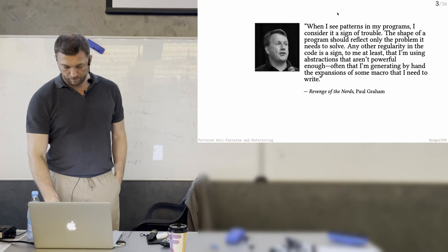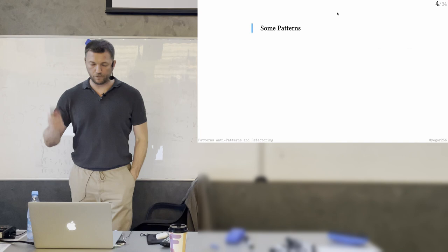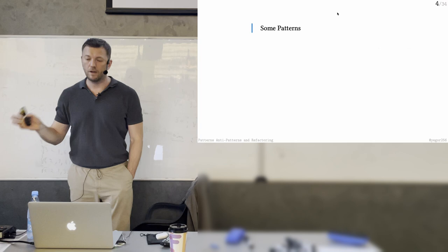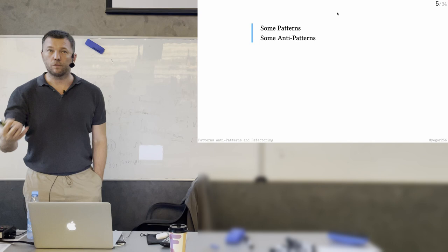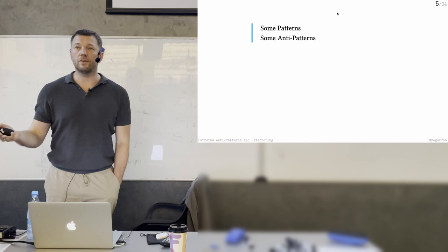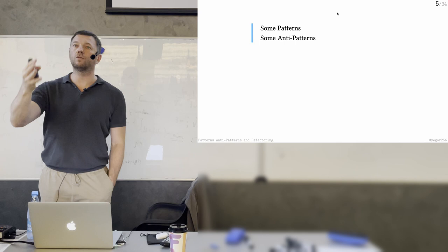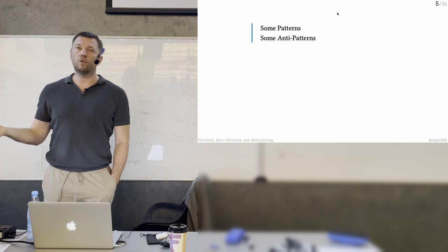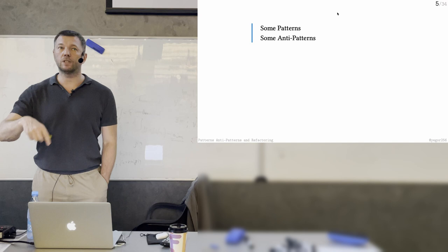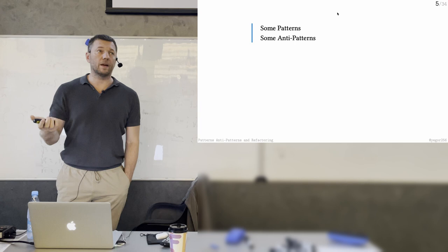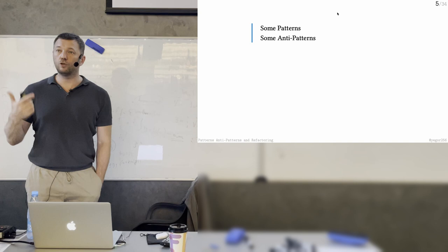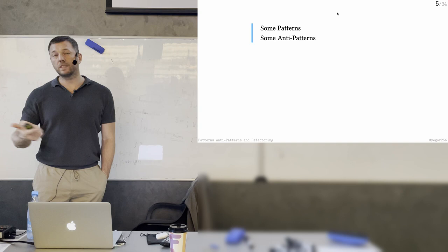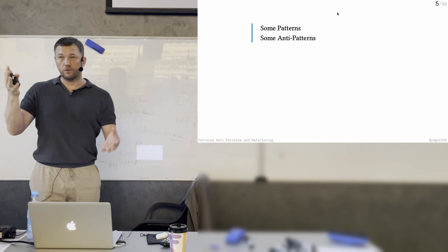Now let's talk about something more specific. We'll consider some patterns — I won't show you all of them, there are tons, just a few. Then we'll talk about anti-patterns. People not only have design patterns; they also have anti-patterns — things you shouldn't do. For example, null references are a design anti-pattern. Static methods and null pointers are things I consider anti-patterns. Singleton, for instance, is in the design patterns book, but I consider it an anti-pattern.